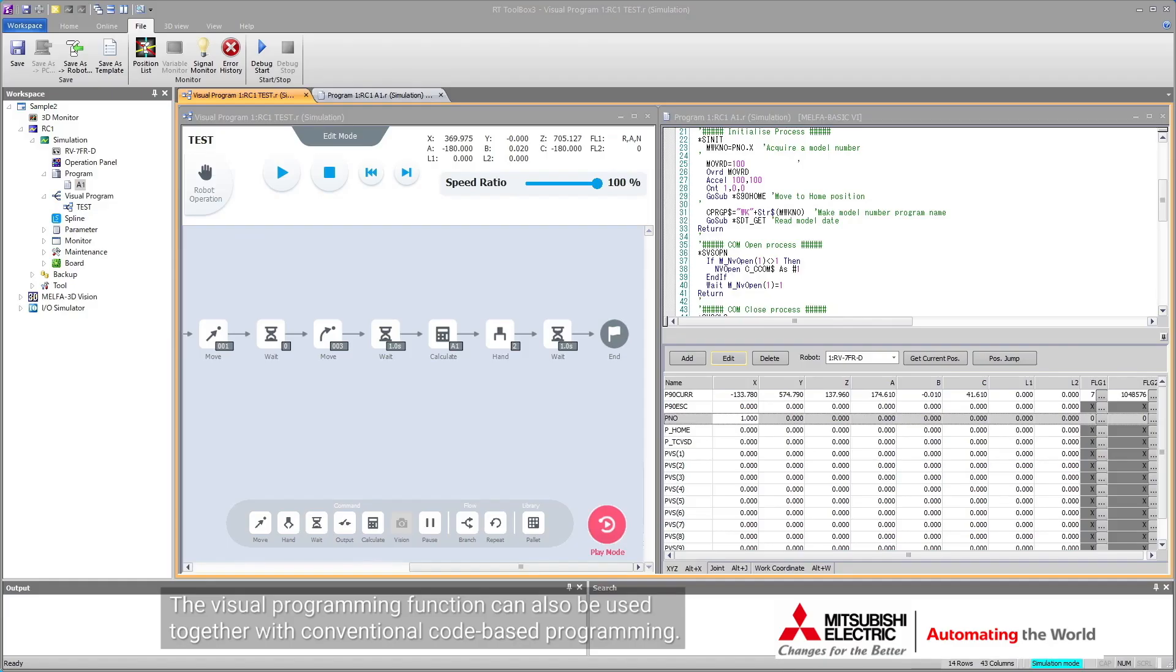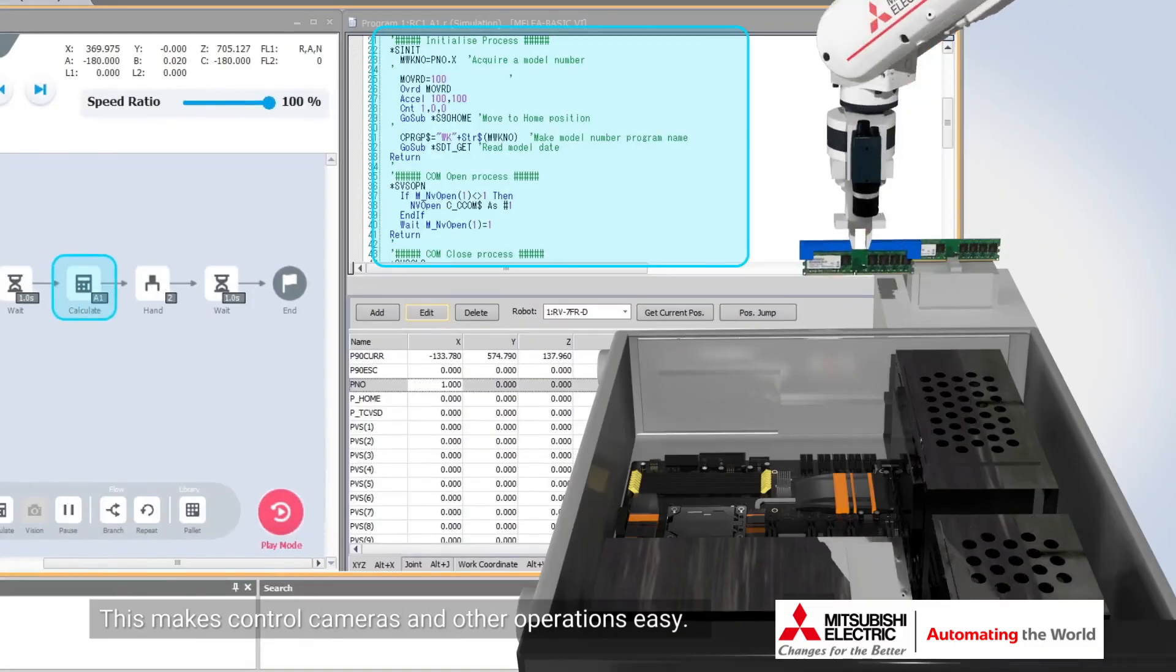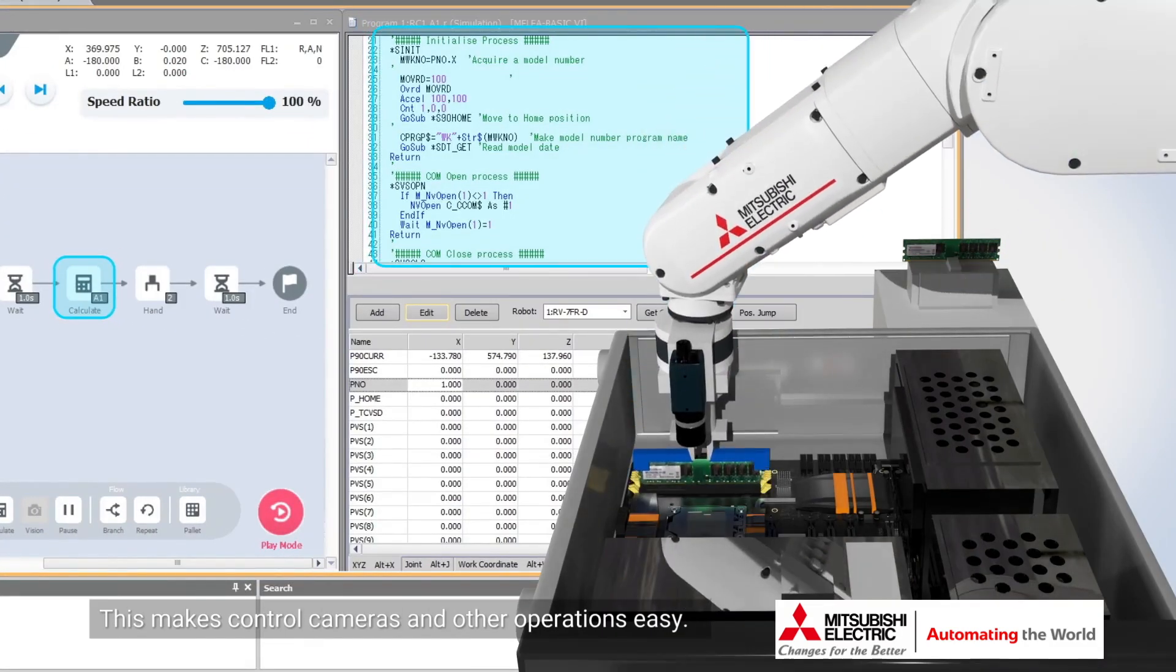The visual programming function can also be used together with conventional code-based programming. This makes controlling cameras and other operations easy.